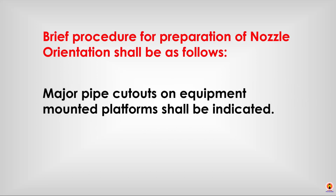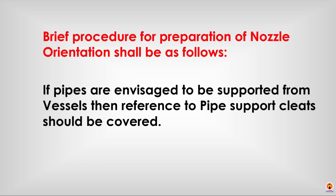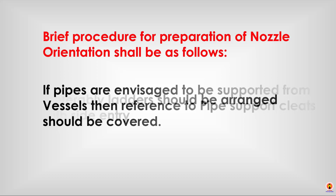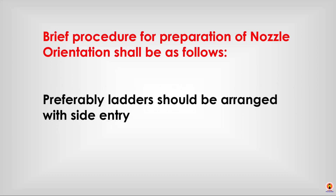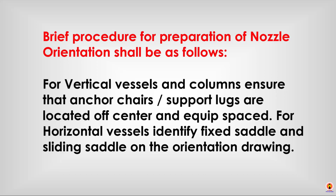Strike ladders with extended support steps are to be used. Major pipe cutouts on equipment-mounted platforms shall be indicated. If pipes are anticipated to be supported from vessels, reference to pipe support cleats should be covered. Preferably, ladders should be arranged with side entry. For vertical vessels and columns, ensure that anchor chairs and support lugs are located off-center and equally spaced. For horizontal vessels, identify the fixed saddle and sliding saddle on the orientation drawing.